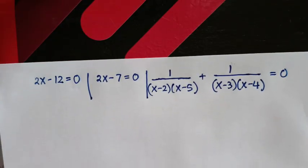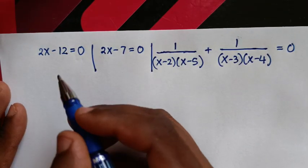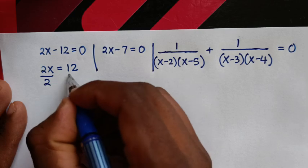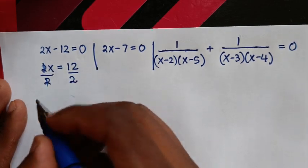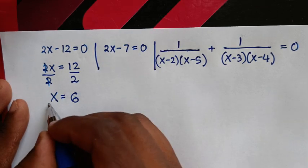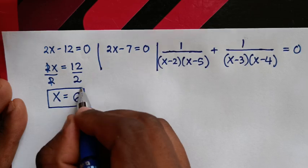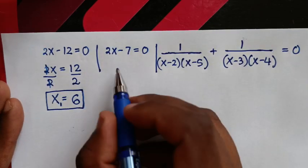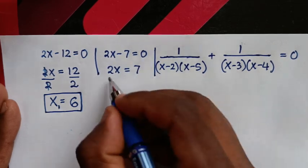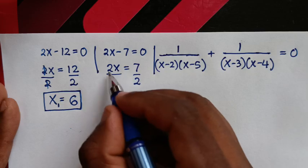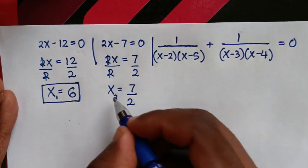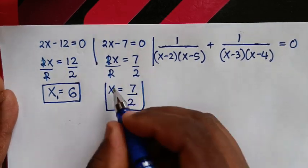From the first solution, 2x minus 12 equals 0: taking negative 12 to the right side gives 2x equals 12, then dividing both sides by 2 gives x equals 6. This is the first value of x. From the second solution, 2x minus 7 equals 0: taking negative 7 to the right side gives 2x equals 7, then dividing both sides by 2 gives x equals 7 over 2. This is the second value of x.